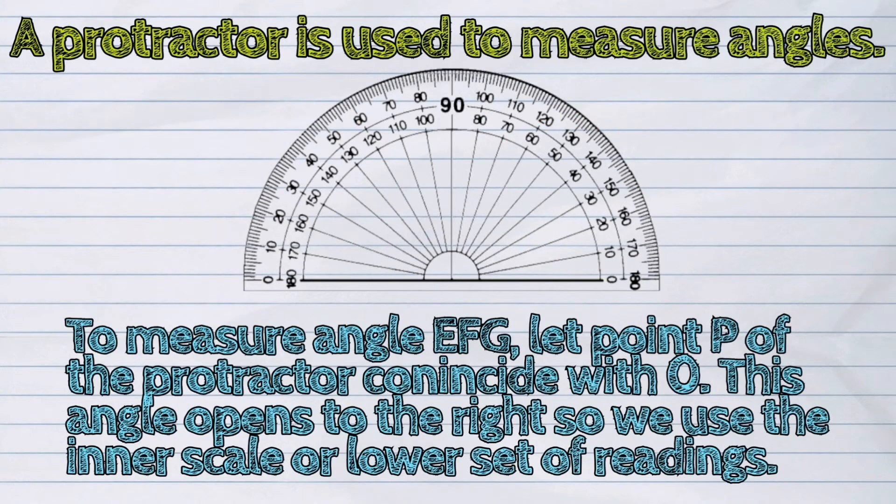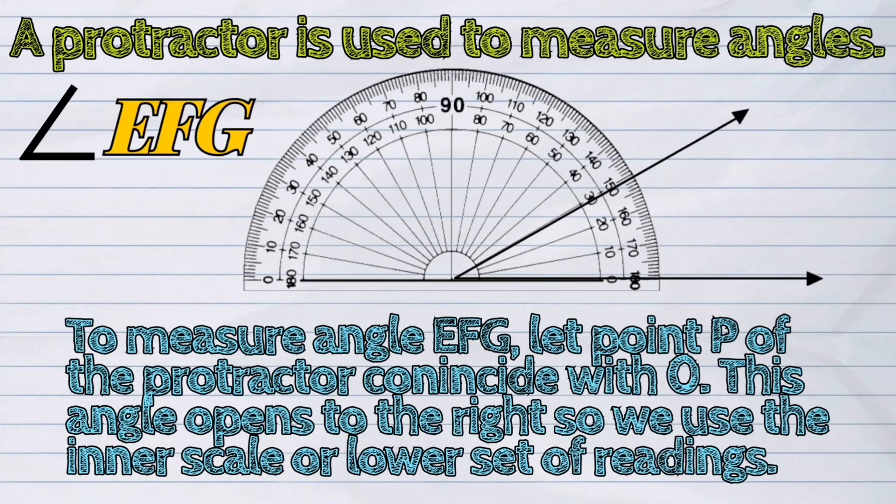Example: to measure angle EFG, let point B of the protractor coincide with zero. This angle opens to the right, so we use the inner scale or lower set of readings.